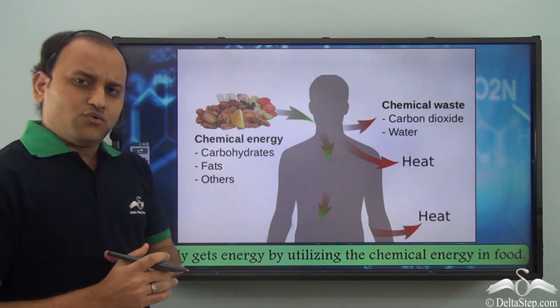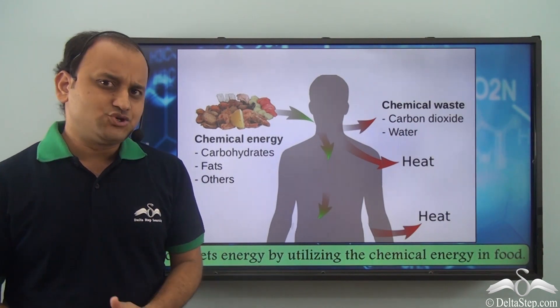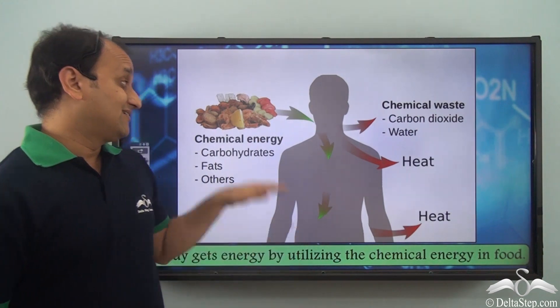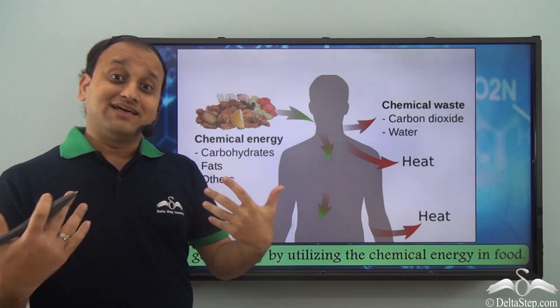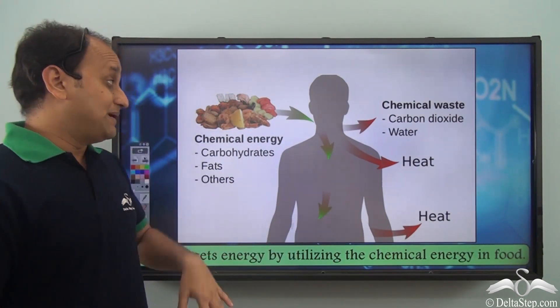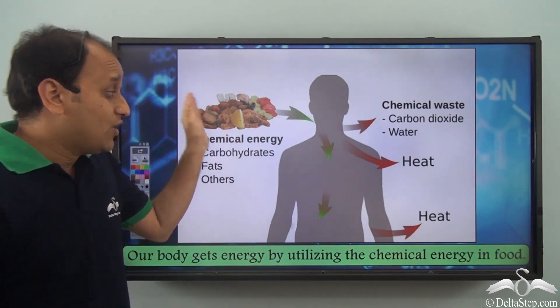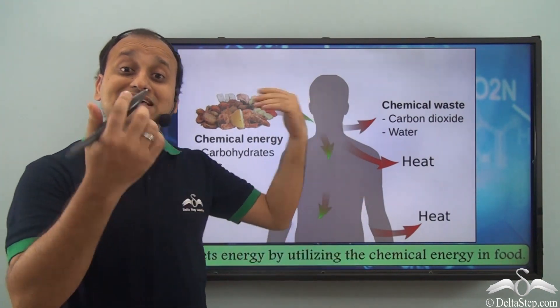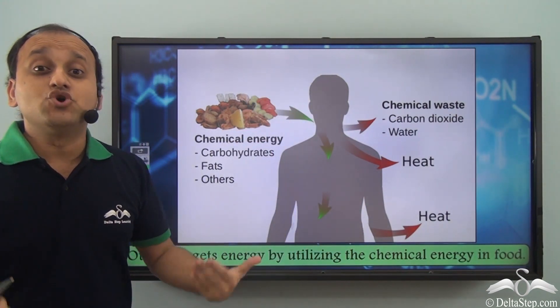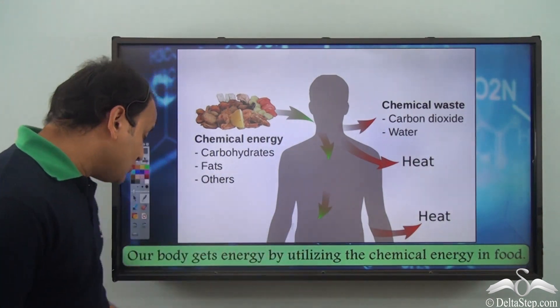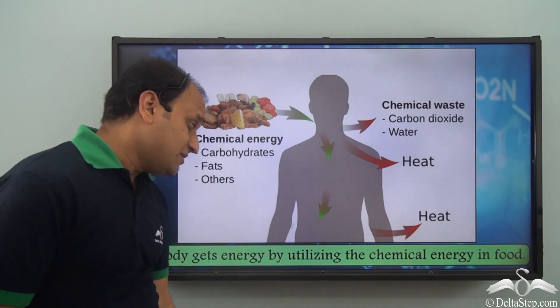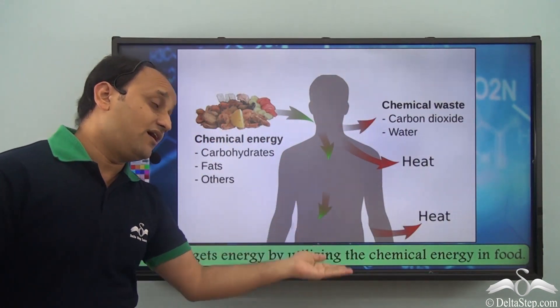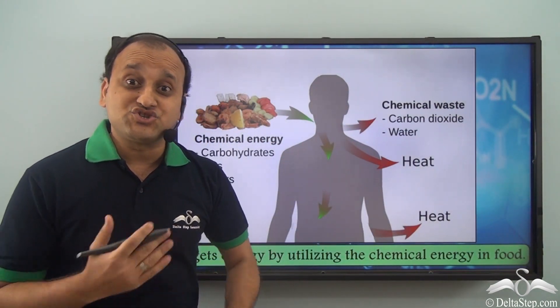Now once we eat the food, what does it do? Well, it provides us energy. Again, inside the food there are a number of chemicals. So basically, food stores chemical energy which enters our body and we are able to utilize that chemical energy to obtain energy for our body. So our body gets energy by utilizing the chemical energy in food. So even here it is chemistry playing the role.